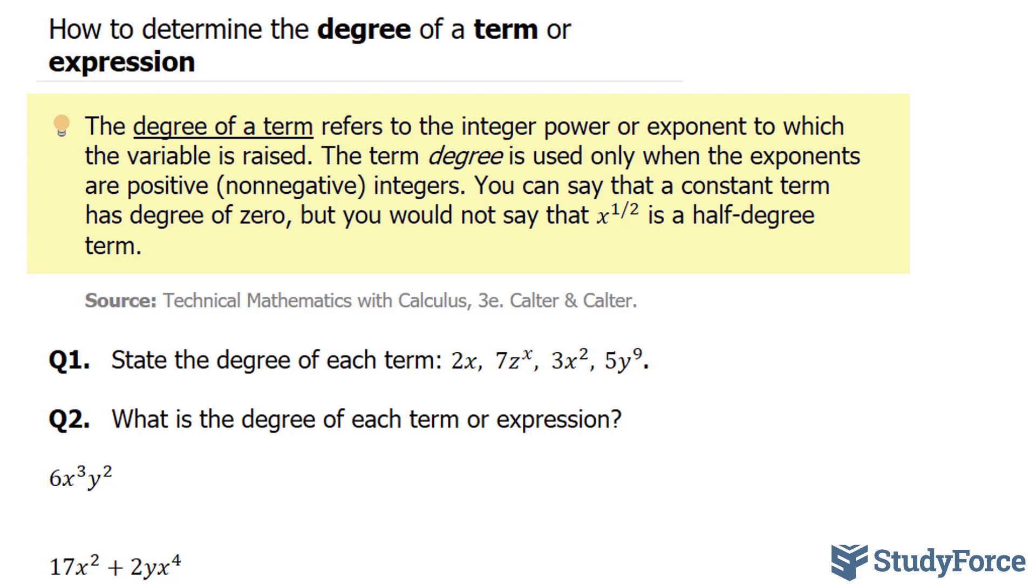You can say that a constant term, let's say a number being added to an expression, has a degree of zero. But you would not say that x to the power of half, for example, is a half degree term. Keep that in mind.